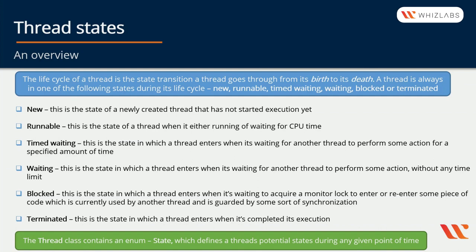New is the state of a newly created thread that has not been started yet. Runnable is the state of a thread when it is either running or waiting for CPU time. Timed Waiting is the state in which a thread enters when it's waiting for another thread to perform some action for a specified amount of time. Waiting is the state in which a thread enters when it's waiting for another thread to perform some actions without any time limit. Blocked is the state in which a thread enters when it's waiting for a monitor lock to enter or re-enter some piece of code which is currently used by another thread and is guarded by some sort of synchronization.